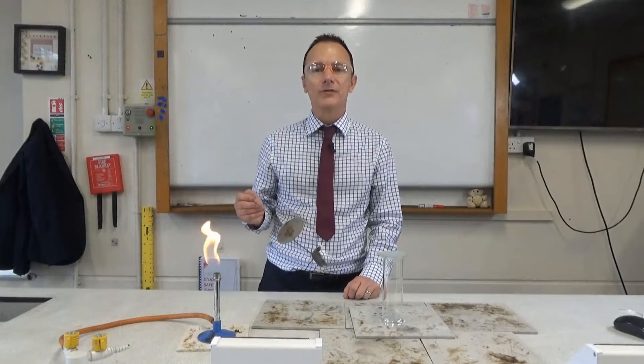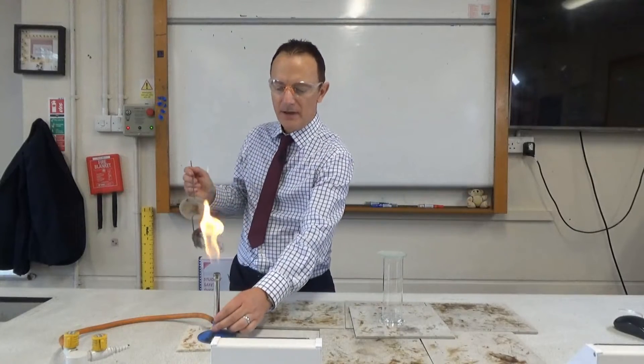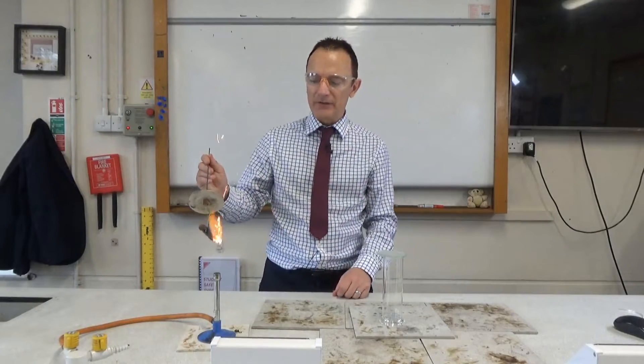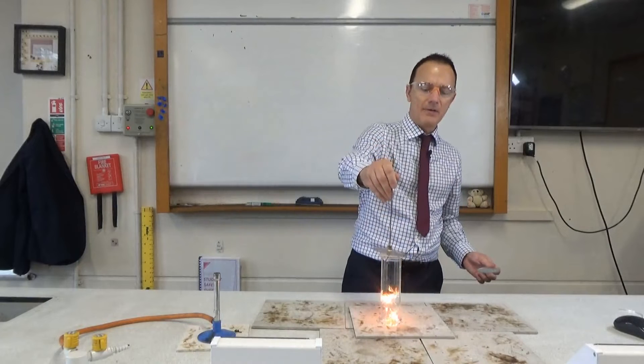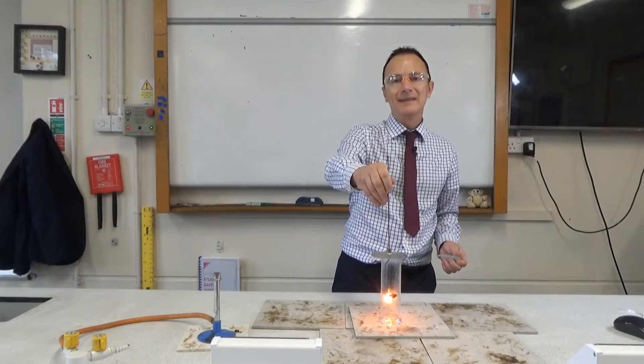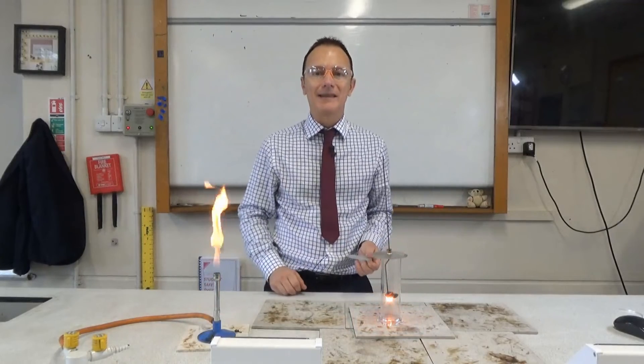We can also look at how metals react with oxygen. So I've got here a gas jar of oxygen and I've got some iron wool so the element is iron. So I'm going to set it on fire and put it in this jar of oxygen to see how it burns and then we're going to compare that to magnesium to try and work out the different reactivity between magnesium and iron.